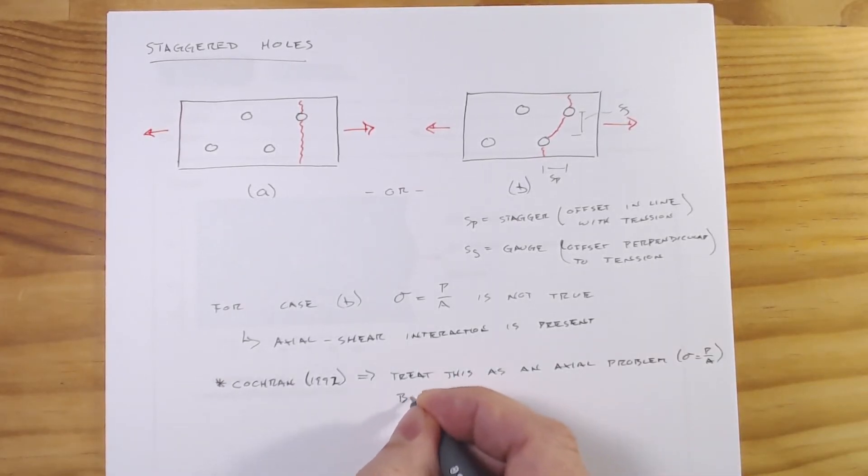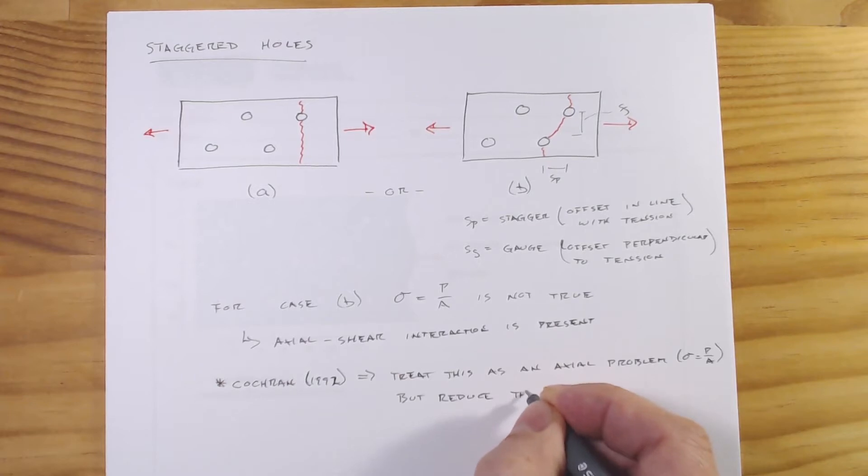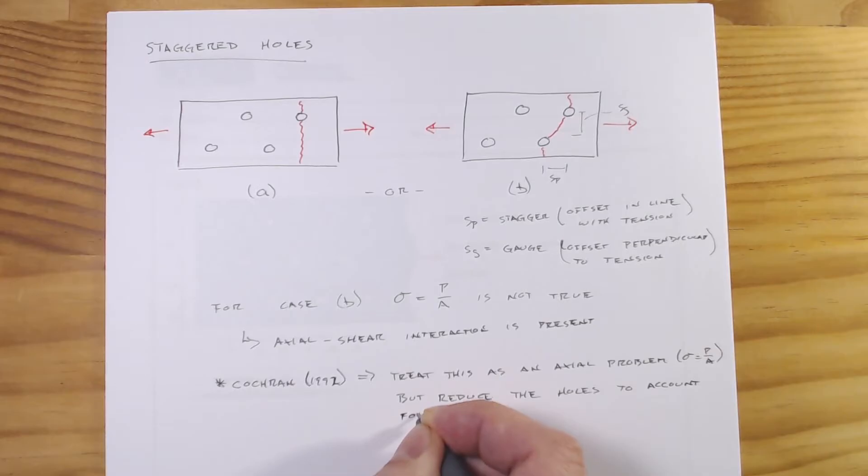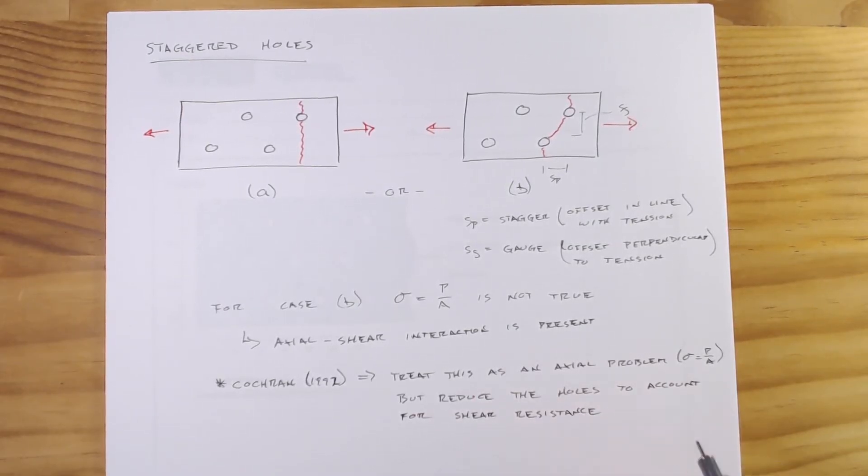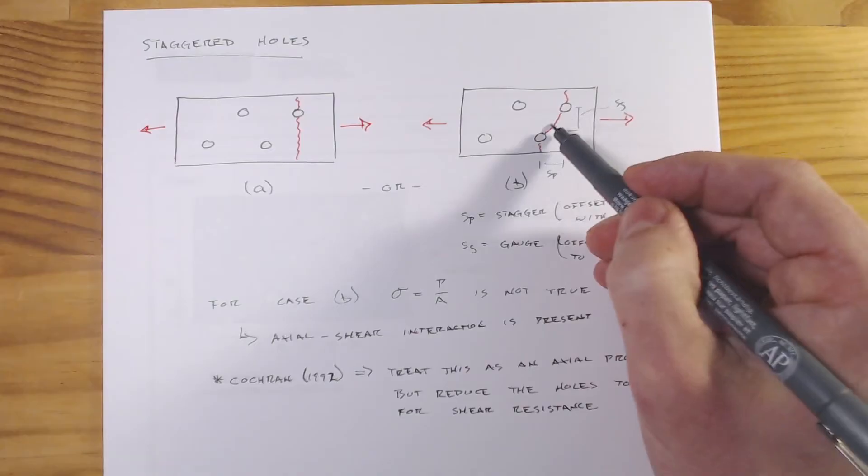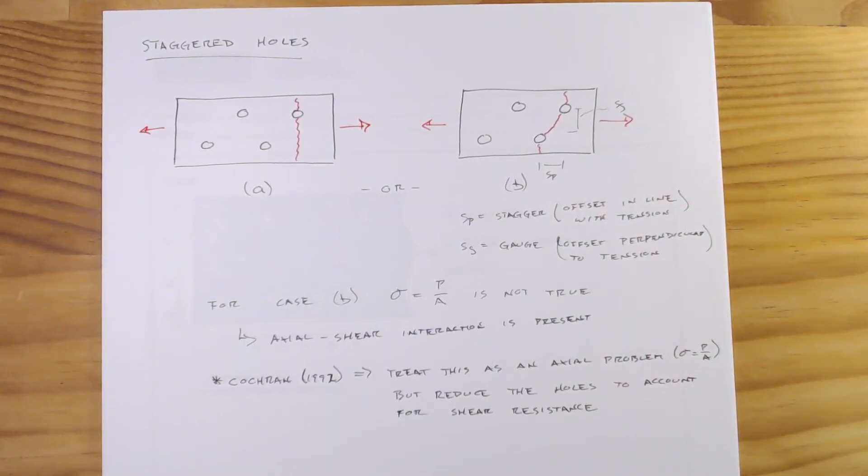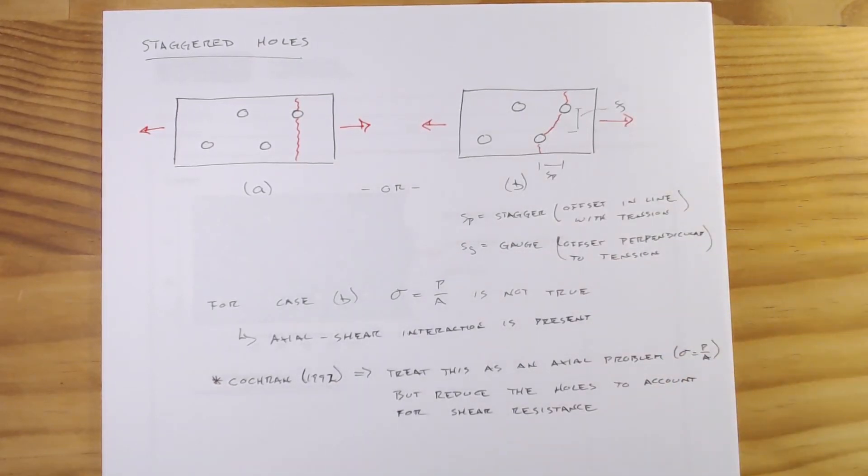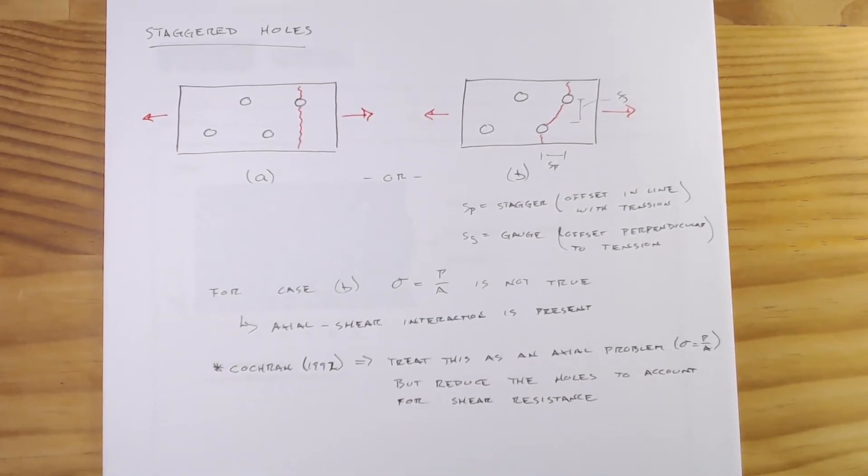We're going to reduce down the holes, and by reducing down those holes, effectively what we can do is we can account for this additional capacity we get from it shearing. Instead of just, we effectively have a larger area here.